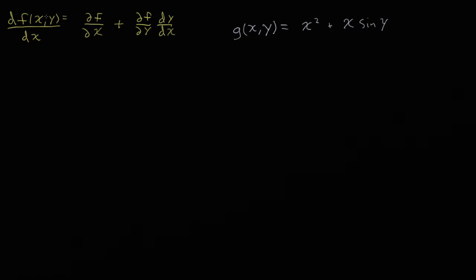It says that if you want to take the full derivative, taking everything into account, we only have to add up two parts. The first part is where we just ignore the fact that y and x might be related to one another — we think of y as a constant with respect to x and take the partial derivative. And then the other part takes into account the changes that happen through y.